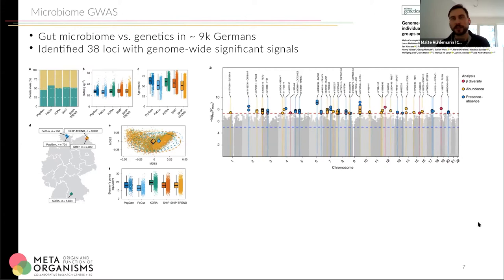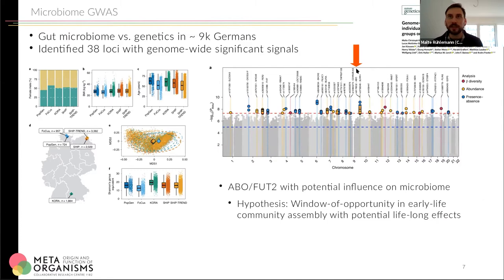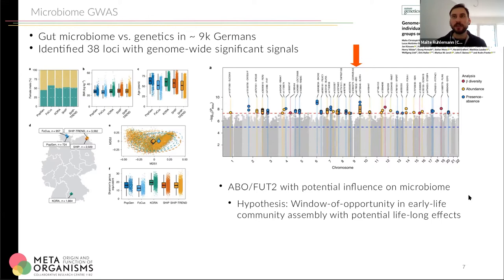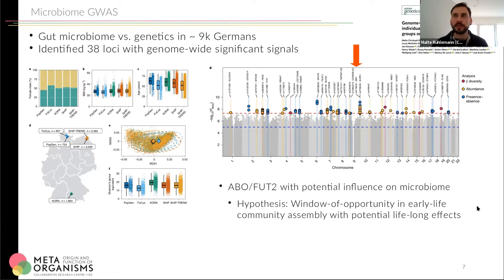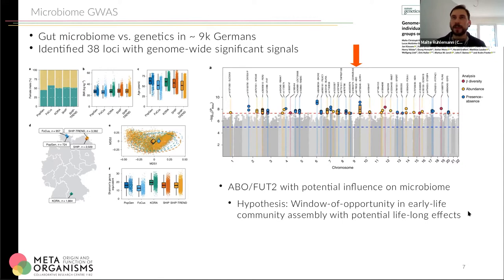One finding we found particularly interesting is on chromosome 9 — the locus which encodes for the ABO histoblood group transferase, the gene that decides which blood group you have and which blood group antibodies you don't develop. We think this is very interesting because these antibodies are not present from birth but develop in the first months of life. We believe this might be connected to the human microbiome and how it develops — a window of opportunity early in life important for community assembly and what the immune system encounters, which might shape the microbiome throughout the life history, also in connection with specific genes like the ABO locus.